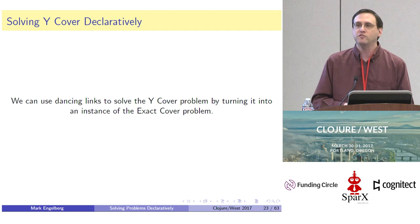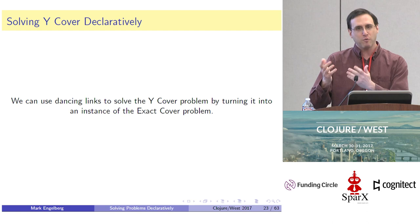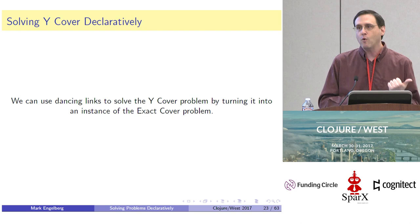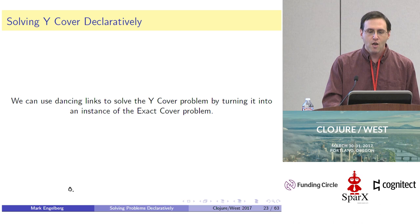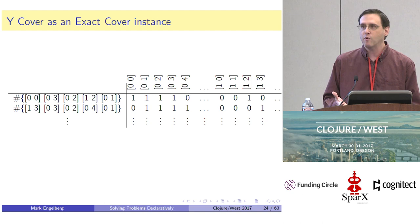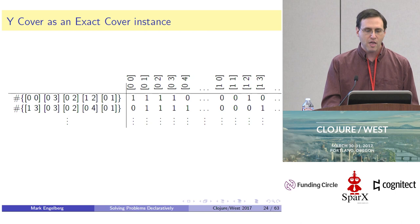Now I promised I would connect this back up to the first problem. We can actually use this Dancing Links algorithm to solve Y-Cover by turning it into an instance of the Exact Cover problem. What we have to do is come up with a matrix of ones and zeros that represents the Y-Cover problem, so we can feed it to dancing-links, and the result we get back is a solution to the Y-Cover problem.